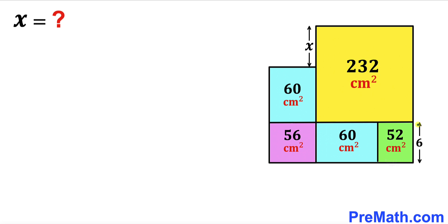Moreover the vertical side length of this green rectangle is 6 centimeter and now our task is to calculate this side length x.